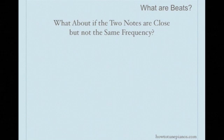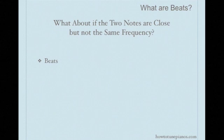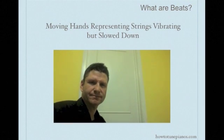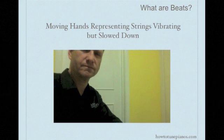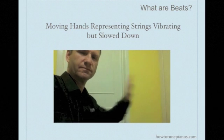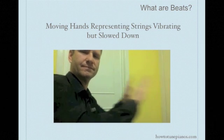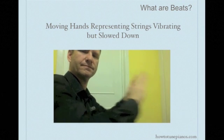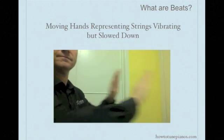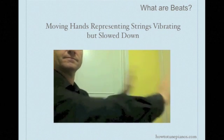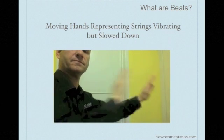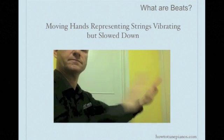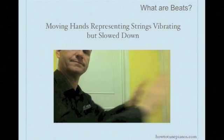Now, if the two notes that are sounded are close but not the same frequency, what happens? Beats are produced. In this video, my hands are going to represent a vibrating string or medium — one hand will represent one string vibrating. If you bring another string in and vibrate at exactly the same speed, the sound is just louder or softer. But if one is slightly off — slower, for example — then eventually you get to the point where one string is pushing and the other is pulling on the air molecules, which results in quietness. And then when they go back into phase, we get loudness. Then out of phase again — quietness. Back into phase — loudness. You get this quietness, loudness, quietness, loudness, and that's what the beats are.